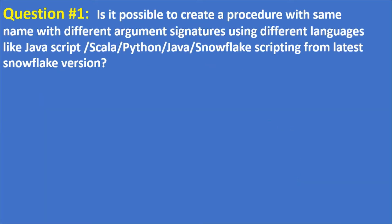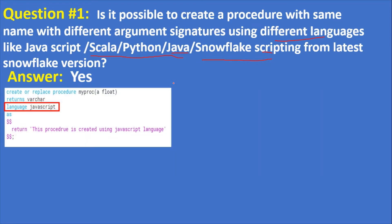The first question is: is it possible to create a procedure with the same name but different argument signatures using different languages like JavaScript, Scala, Python, Java, and Snowflake Scripting? The answer is yes. Snowflake has introduced Snowpark along with Snowflake Scripting language. When creating a stored procedure you can use JavaScript, or Snowpark — which comes with Scala, Python, and Java — or Snowflake Scripting.